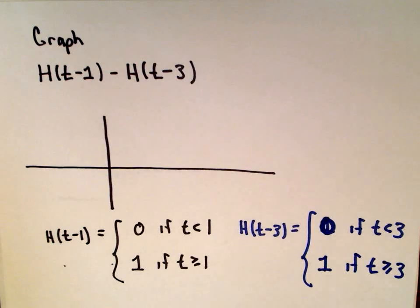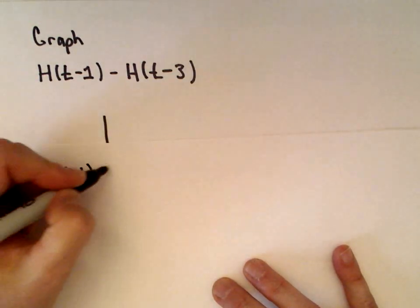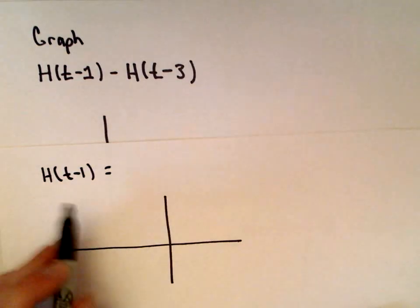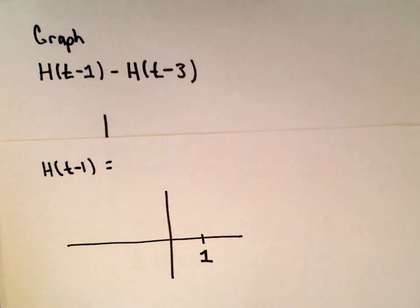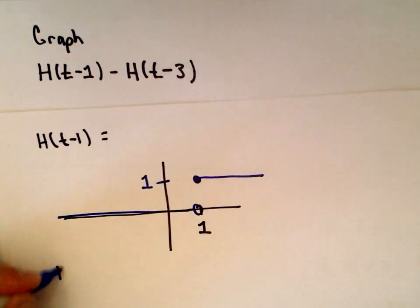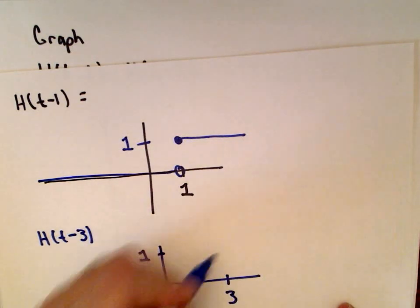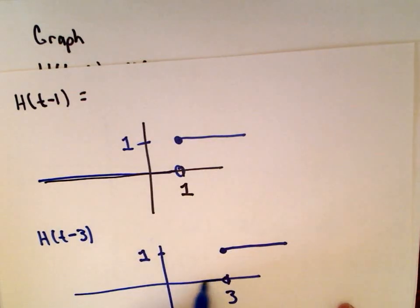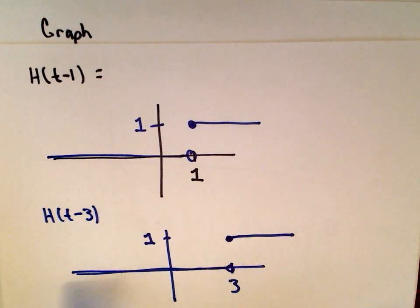We've got a difference of these Heaviside functions. If you were to graph h of t minus 1, if you remember graph shifting from algebra, the only thing that changes is instead of the current coming on at t equals 0, now it's going to be shifted one unit to the right, so it won't turn on until t equals 1 — it would be 0 prior to that. And likewise, h of t minus 3 won't get kicked on until t equals 3. They're just starting at different places.